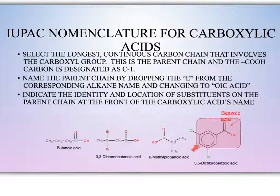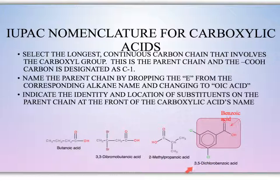This structure here is a benzene ring, and the carboxyl group is off of carbon one, so we have benzoic acid. We also have something on carbons three and five — they're both chlorines — so we would have 3,5-dichlorobenzoic acid.